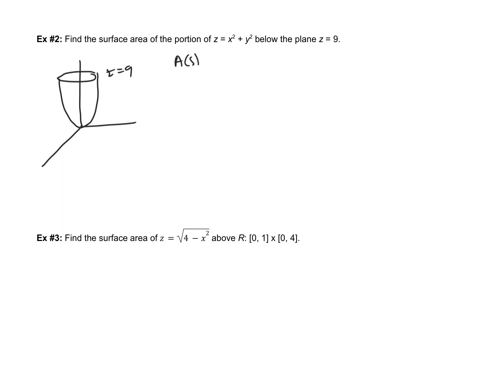So then if we set up our surface area, we have our double integral of the square root of (2x)² + (2y)² + 1 dA. So that's over our region R. Simplifying, this would give us √(4x² + 4y² + 1) dA.